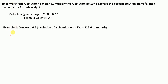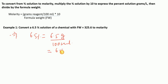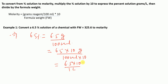So 6.5% can be written as 6.5 grams per 100 mL. If we multiply both the numerator and denominator by 10, we get 65 grams per 1 liter. So a 6.5% solution is actually 65 grams per liter.